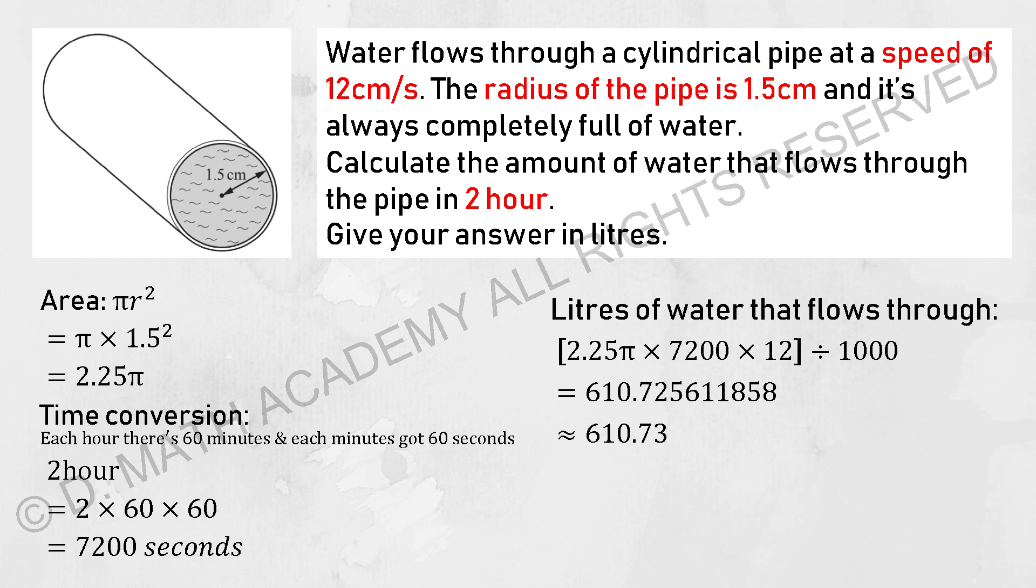So first thing you need to calculate the area of the circle over there, which is 2.25π. And for 2 hours, you need to identify how many seconds is there, which is 7,200 seconds.